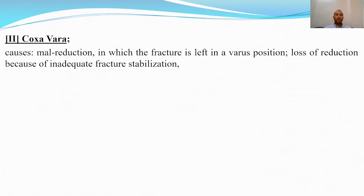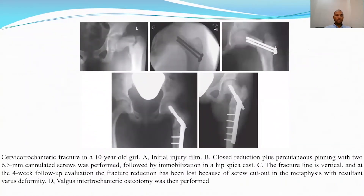The second common complication is coxa vara, which usually results from malreduction of the fracture or loss of reduction due to inadequate fracture stabilization. For example, this 10-year-old girl with a cervicotrochanteric fracture — the fracture line is vertical and was fixed by two cannulated screws. Unfortunately, follow-up showed cut-out of the screws through the metaphysis, resulting in coxa vara. This was managed by subtrochanteric valgus osteotomy to correct the coxa vara, resulting in good union.